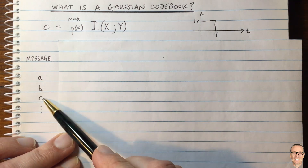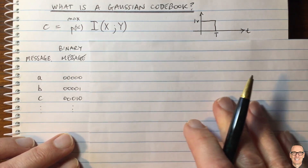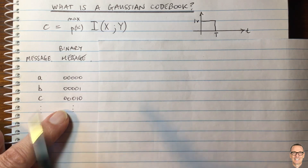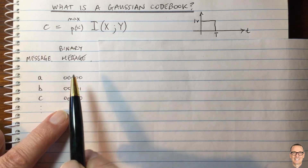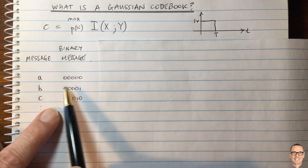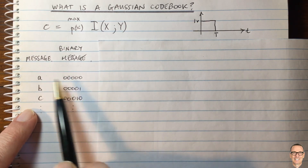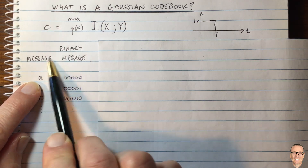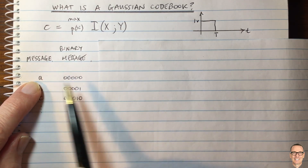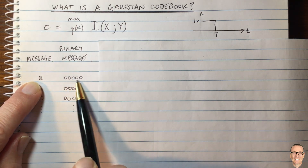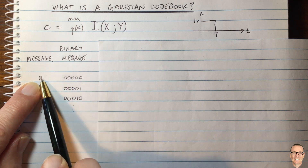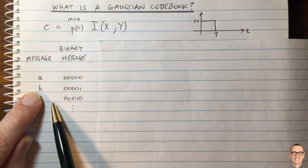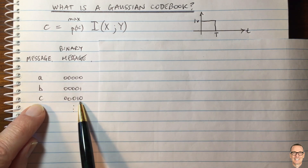There are 26 letters. If we have five bits, then we've got two to the power of five possibilities — that's 32 — which is more than 26. So we can do a one-to-one mapping from the message, which is the letter we want to send, to a binary sequence. For example, A could be mapped to all zeros, B to four zeros and a one, and so on.